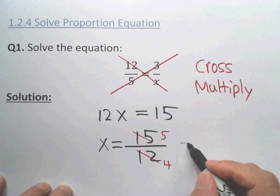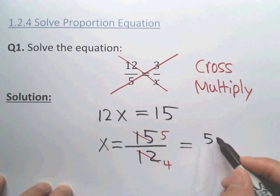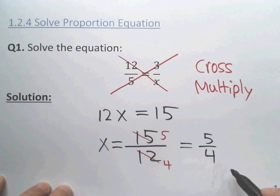Therefore, the final result: x is 5 over 4, okay? Or 1.25 if you use a calculator.